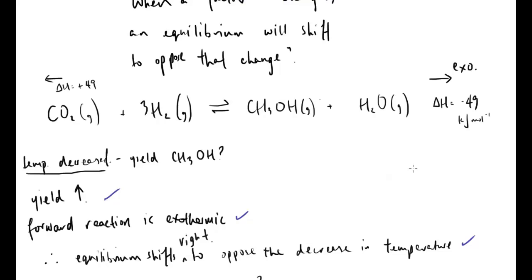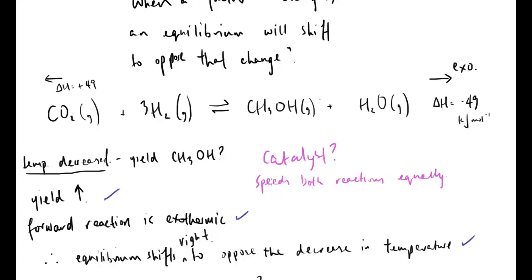What happens if you add a catalyst? A catalyst will do nothing to the position of equilibrium - it will remain where it would be anyway. This is because a catalyst speeds up the forward and backward reactions equally. However, equilibrium will be reached faster. That's a very key point: a catalyst does not change the position of equilibrium, but equilibrium is reached more quickly, which is useful in industry. A catalyst will not help you increase or decrease the yield of your desired product.